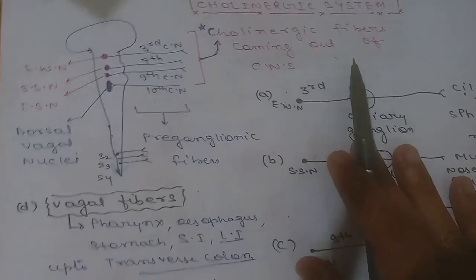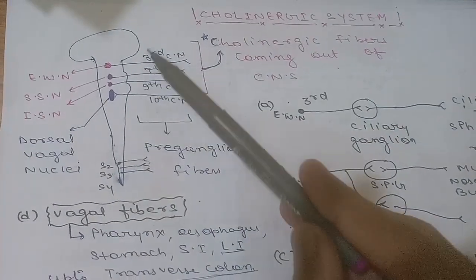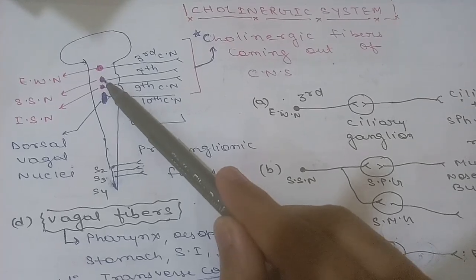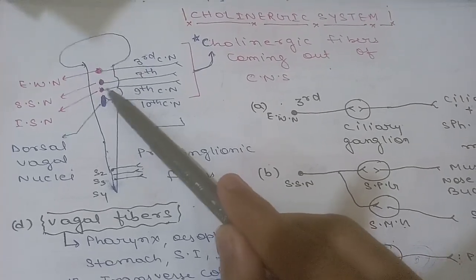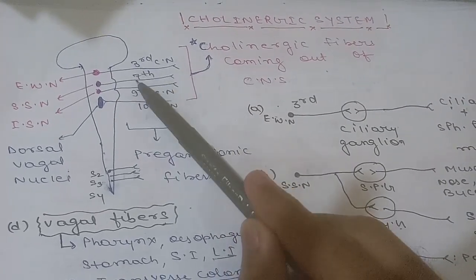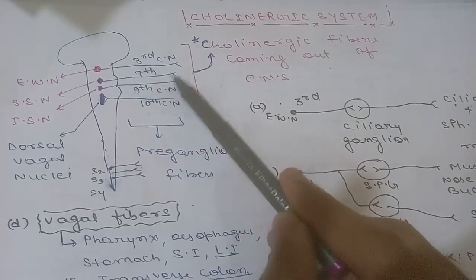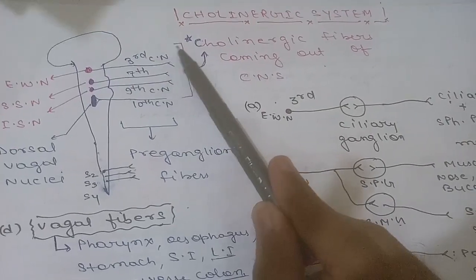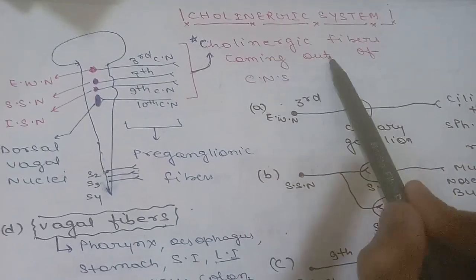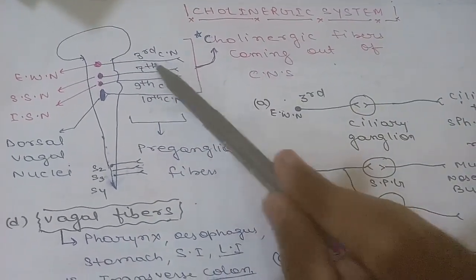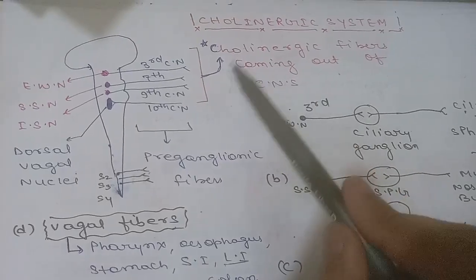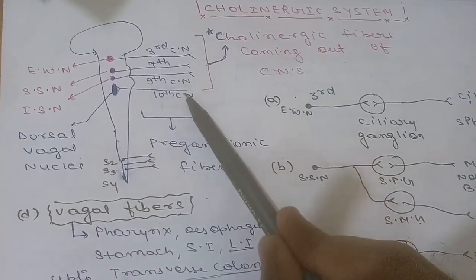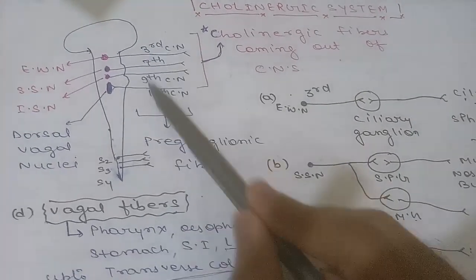Starting with the central nervous system: the Edinger-Westphal nucleus, superior salivatory nucleus, inferior salivatory nucleus, and nuclei giving rise to the 3rd, 7th, 9th cranial nerves. From the dorsal vagal nucleus, the 10th cranial nerve arises. All of these are cholinergic fibers coming out of the CNS — 3rd, 7th, 9th, and 10th cranial nerves — and they are the pre-ganglionic fibers.